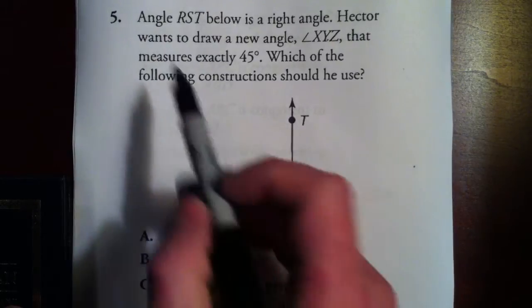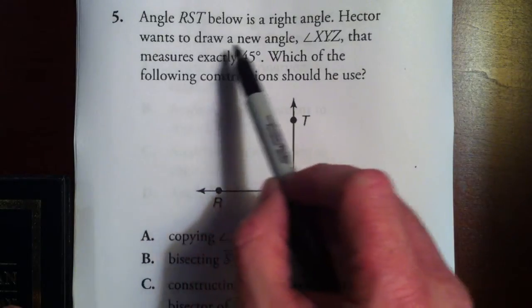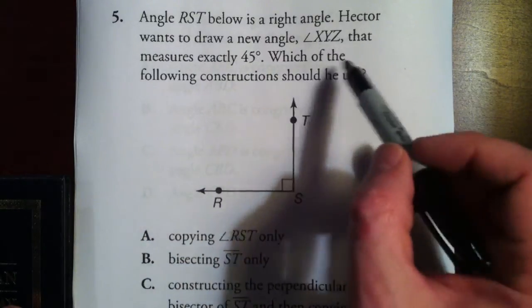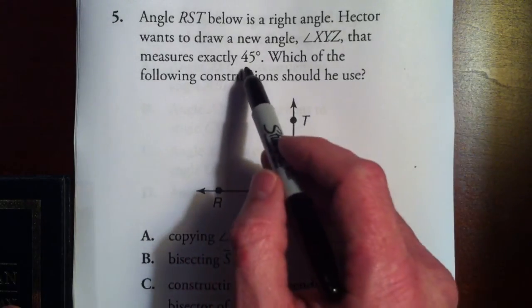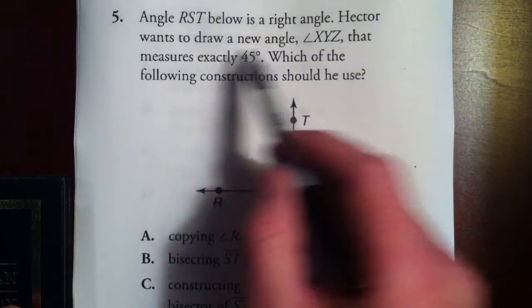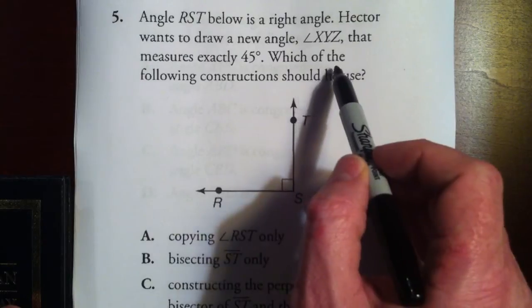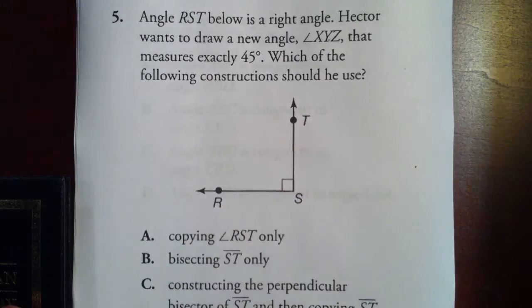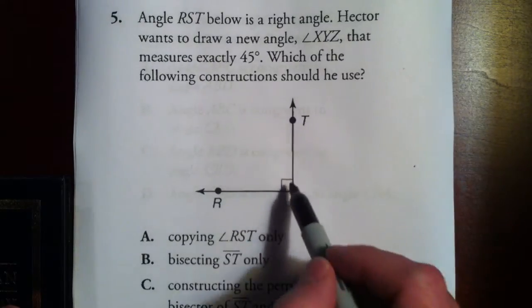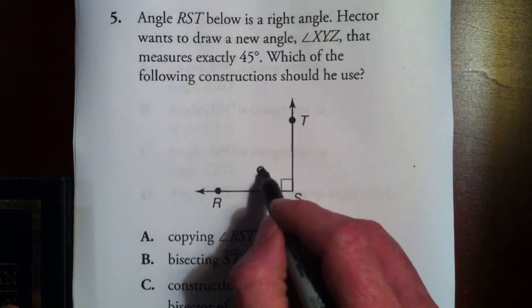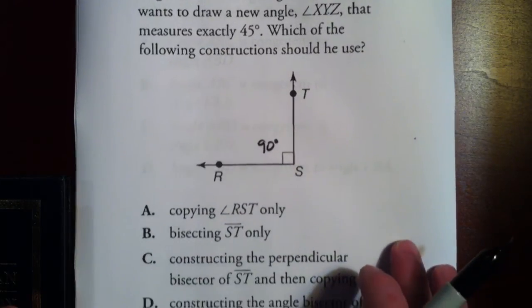Number five. Angle RST below is a right angle. Hector wants to draw a new angle XYZ that measures exactly 45 degrees. Remember, a right angle is 90 degrees, and he wants to draw a new angle that's 45 degrees — half of that. Which of the following constructions could he use? What could he do to accomplish that?